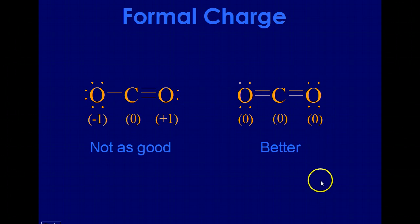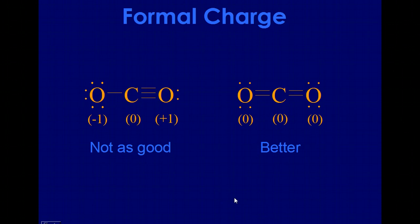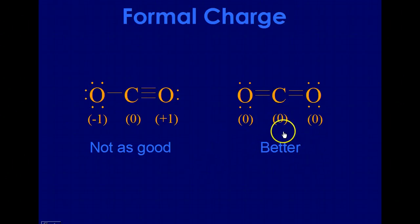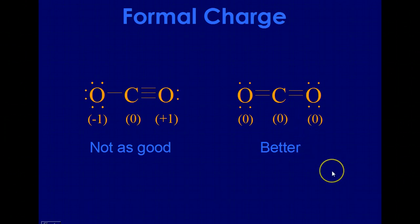Remember that oxygen has six valence electrons, carbon has four, and that you only count half of the electrons for the bonds but all of the electrons for the lone pairs. This structure with two double bonds is more stable because it minimizes the positive and negative charges on each of the individual atoms.